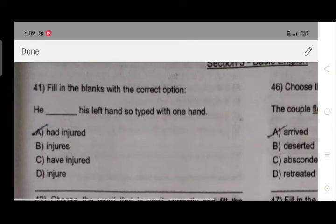had injured, B injures, C have injured and D injure. Two sentences are in past tense, that's why here